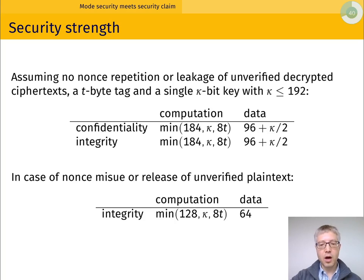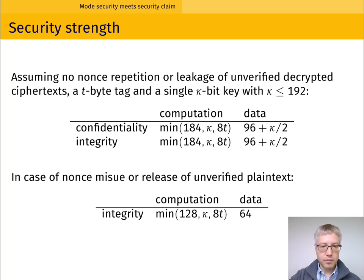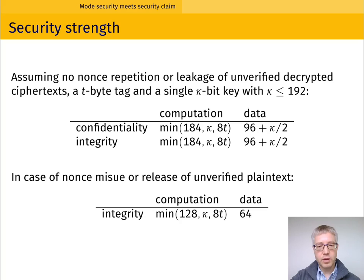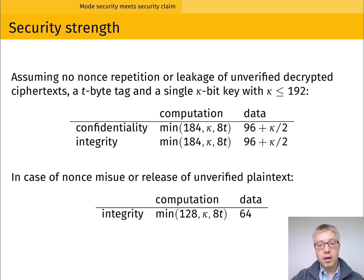What happens in the case of nonce misuse? For the first blocks where two plaintexts differ, you will be able to see the difference, and then after that the key stream will diverge. This is the same behavior as for any other duplex-based authenticated encryption mode. If there is no nonce or massive nonce misuse or release of unverified decrypted ciphertexts, the adversary has more degrees of freedom. Nevertheless, keys should still be protected and integrity should still be guaranteed, though the security bound decreases somewhat, but not dramatically.